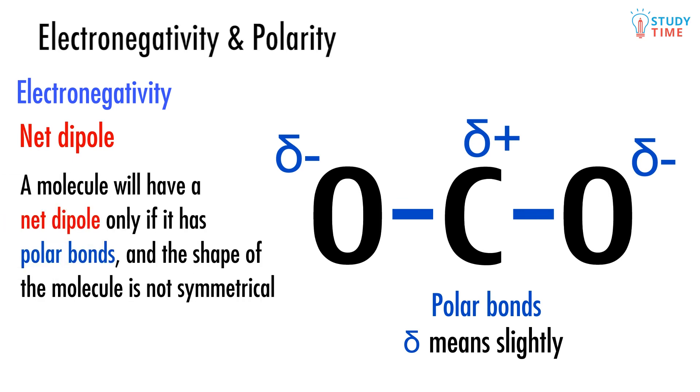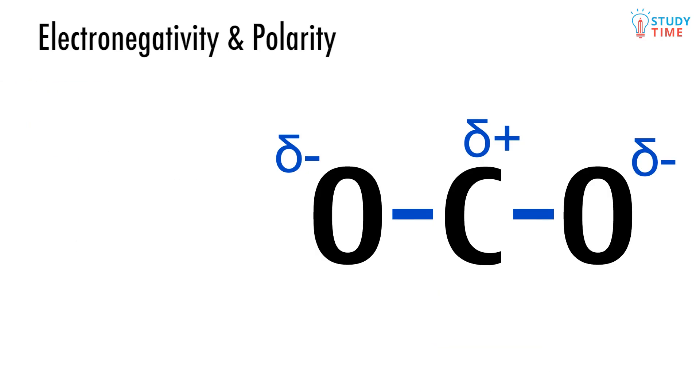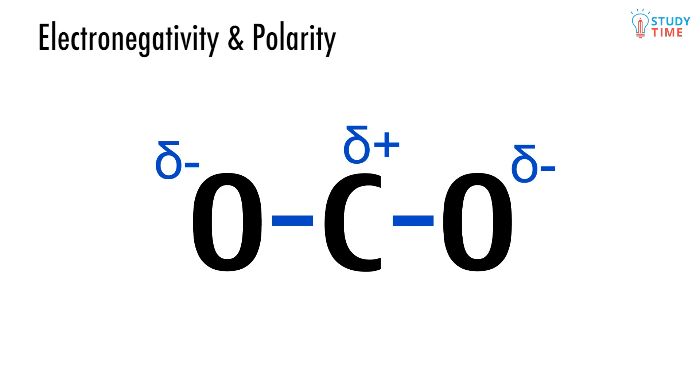A molecule will have a net dipole only if it has polar bonds and the shape of the molecule is not symmetrical. Why is being symmetrical or asymmetrical important? Well, look at our lonely molecule of carbon dioxide over here.